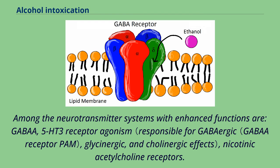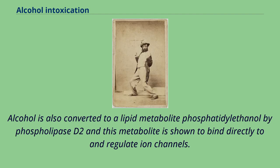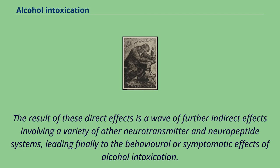Among the neurotransmitter systems with enhanced functions are GABA, 5-HT3 receptor agonism, glycinergic, and cholinergic effects, including nicotinic acetylcholine receptors. Among those that are inhibited are NMDA, dihydropyridine-sensitive L-type Ca2+ channels and G-protein-activated inwardly rectifying K+ channels. Alcohol is also converted to a lipid metabolite phosphatidylethanol by phospholipase D2, and this metabolite is shown to bind directly to and regulate ion channels. The result is a wave of further indirect effects involving a variety of other neurotransmitter and neuropeptide systems, leading finally to the behavioral or symptomatic effects of alcohol intoxication.